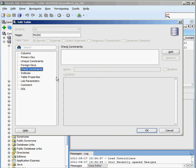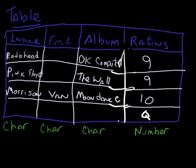A check constraint is one where I can write a simple rule to limit the information accepted into a particular table. Is there any check constraint for last name, first name, or album? Probably nothing for those three columns. But what about rating? Rating seems to be a good candidate — I probably want to limit the information in rating to between 0 and 10. Some people rate in stars, some use 0 to 10, some use 0 to 100. But to maintain consistency in my database, I probably don't want somebody putting in something like 600. I want to limit the rating field to between 0 and 10.